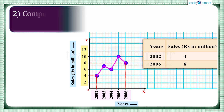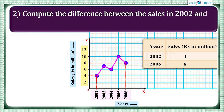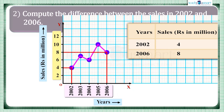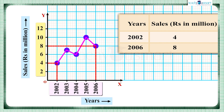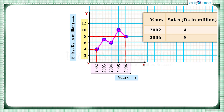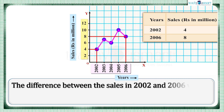Next, compute the difference between the sales in 2002 and 2006. We got the sales in 2002 as 4 million and in 2006 as 8 million. The difference between the sales in 2002 and 2006 was 8 minus 4, which equals 4 million.